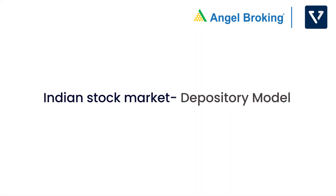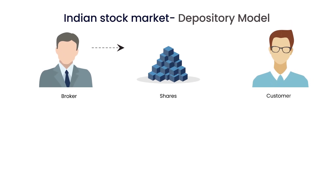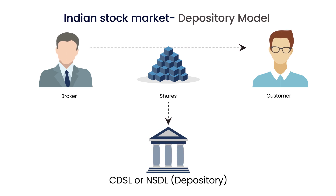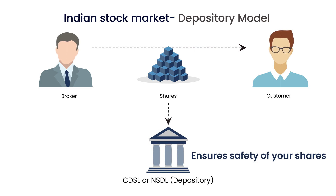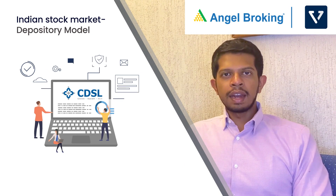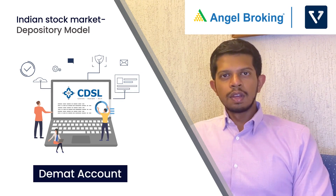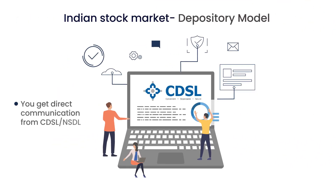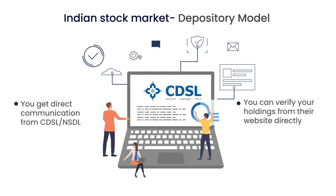In India, we follow what is called the depository model. So if you're buying shares through a broker in India, your shares will be held at a depository, either CDSL or NSDL. It is the ultimate responsibility of the depository to ensure that your shares are held safely. These shares are in electronic form in an account called the DMAT account. What's important to note is that the account at the depository is under your name, which means you get direct communication from CDSL or NSDL and you can also go to their website to verify your holdings directly.